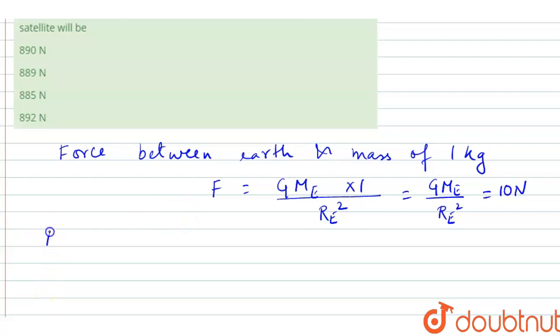Here Mₑ is nothing but mass of the earth and Rₑ is radius of the earth.